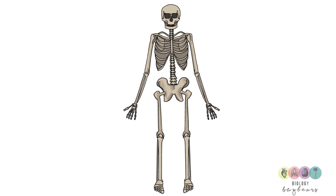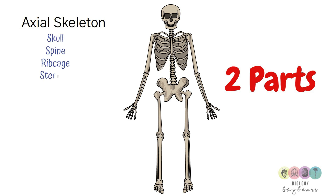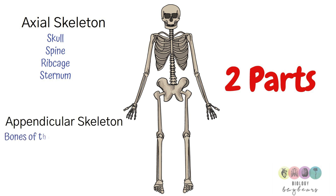The first thing to know is that the skeleton is made up of two parts. Firstly, there's the axial skeleton that consists of the bones in the skull, the spine, the ribcage and including the sternum. And then there is the appendicular skeleton, which consists of the bones of the limbs — the arms and the legs — and the pectoral girdle and the pelvic girdle.